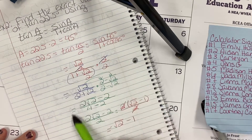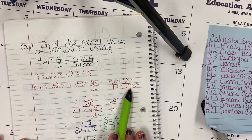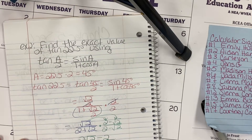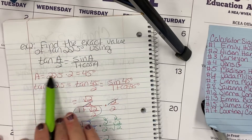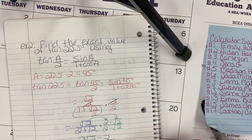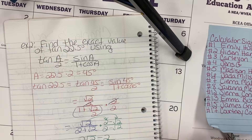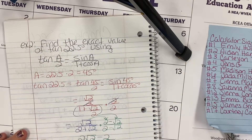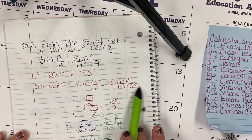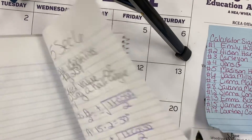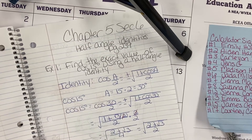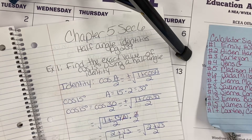The only trig part in this whole problem is right at the beginning — the rest is basic algebra skills from Algebra 1 and 2, just simplification. Just like in calculus, once you get through the calculus concepts it's nothing but algebra. That's why algebra is the foundation. This algebra work is stuff you've been doing since middle school.